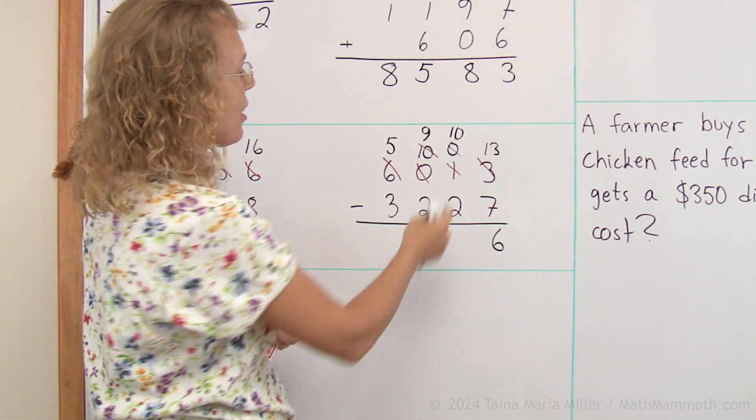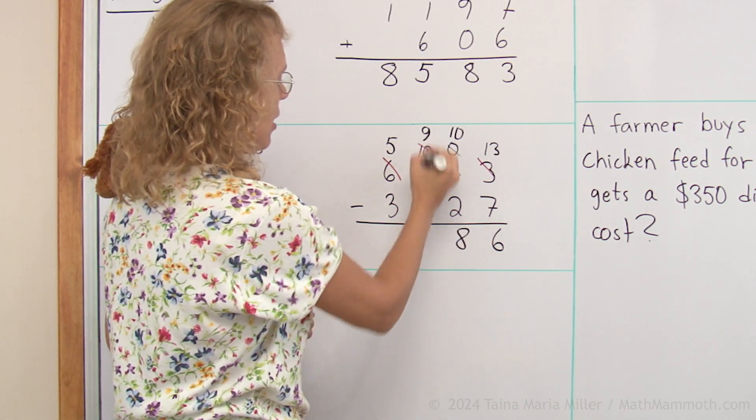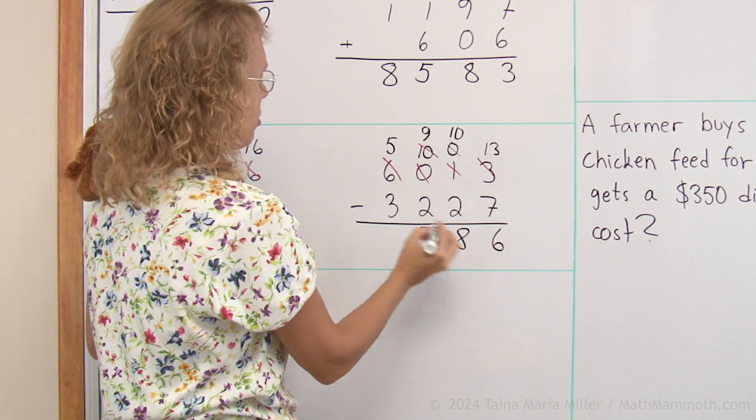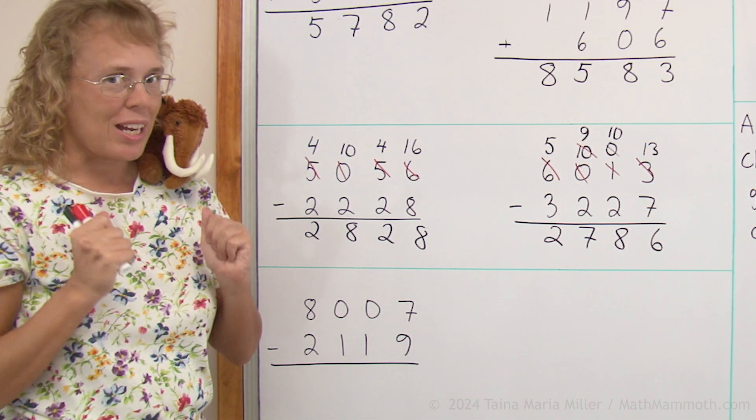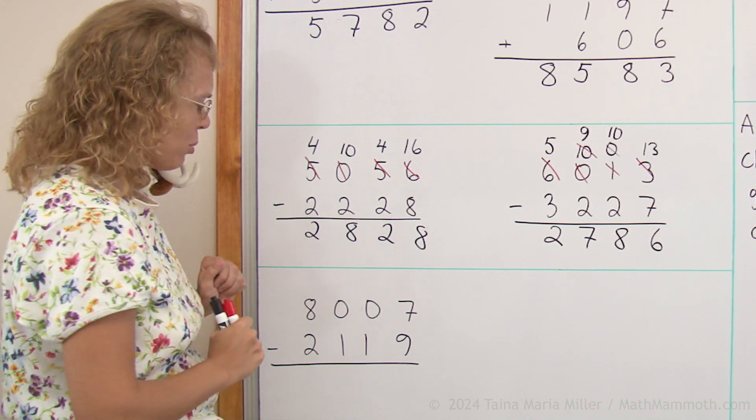And now I can subtract everything. Ten minus two, nine minus two, and five minus three. Regrouping with zeros might need more practice. Let's do one more of those kind.